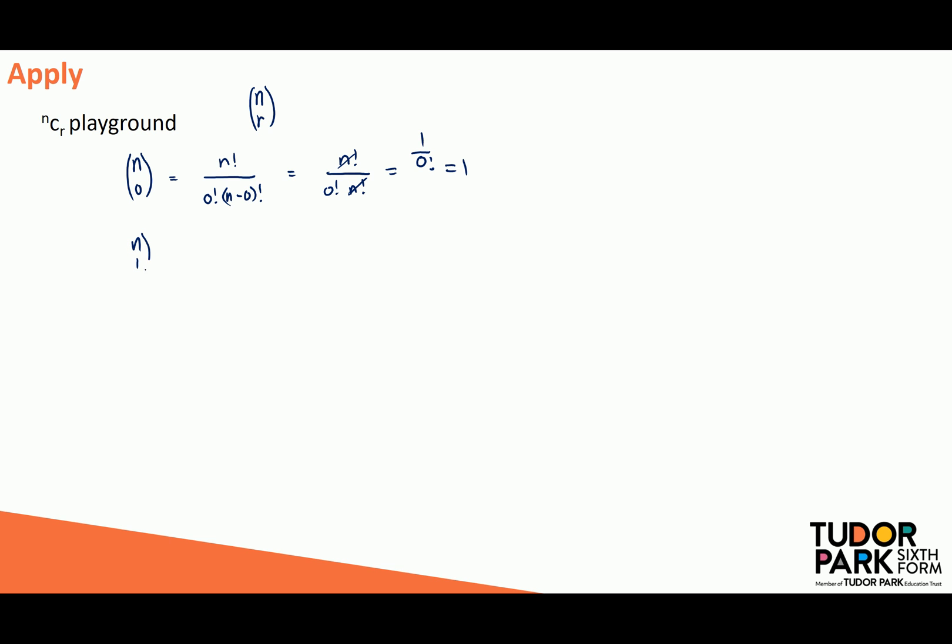Let's look at n choose 1. That would be n factorial over 1 factorial times n minus 1 factorial. Now here it's going to help us just to rewrite our numerator as n times its predecessor n minus 1 all over 1 factorial n minus 1 factorial and we'll see we've got cancellation and this just becomes n.